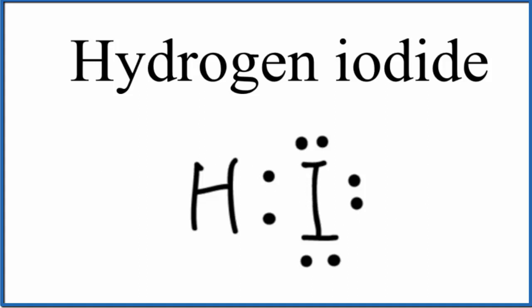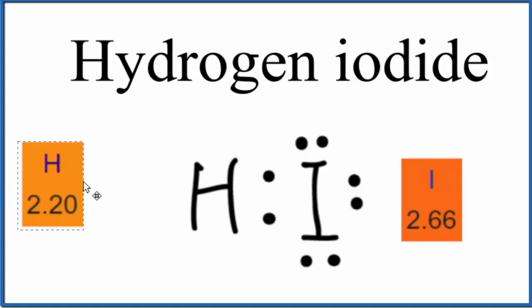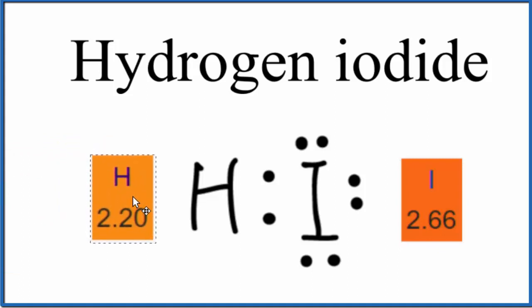When we look at polarity, we want to look at the difference in electronegativity between the elements. So iodine, if we look it up on the periodic table, 2.66 is its electronegativity value, where hydrogen is 2.20. So the difference here is 0.46, and often that's considered to be a polar bond when we have that difference.